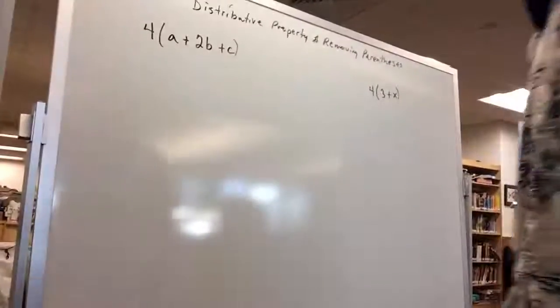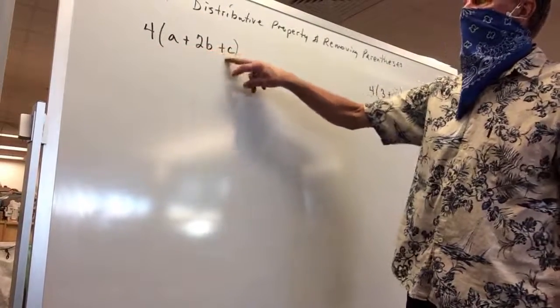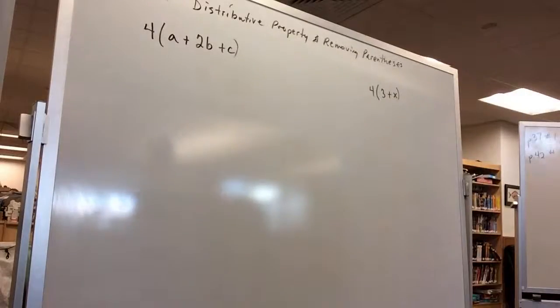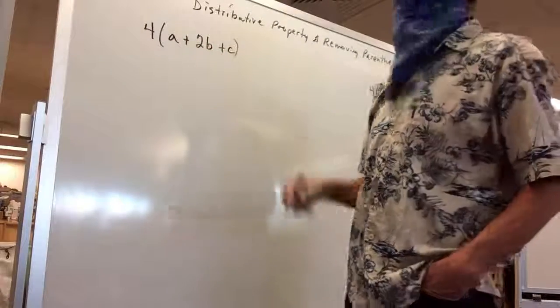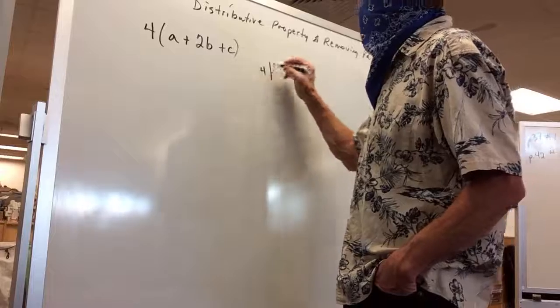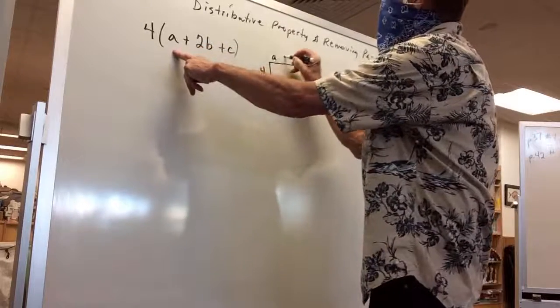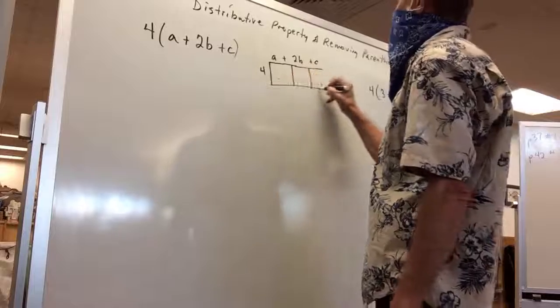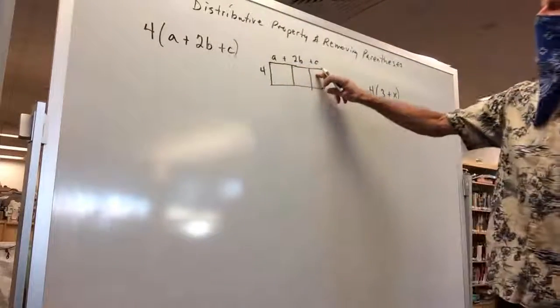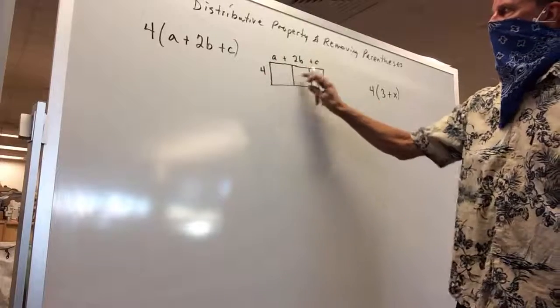So now let's come back over to this other problem on the board. I've got four multiplied by a plus two b plus c. So there are three terms in the parentheses, but the idea is that the four has to be multiplied by each and every one of these. So if you wanted to draw a picture of it, you might think of it like this: one side is four and the other side is a and 2b and c.